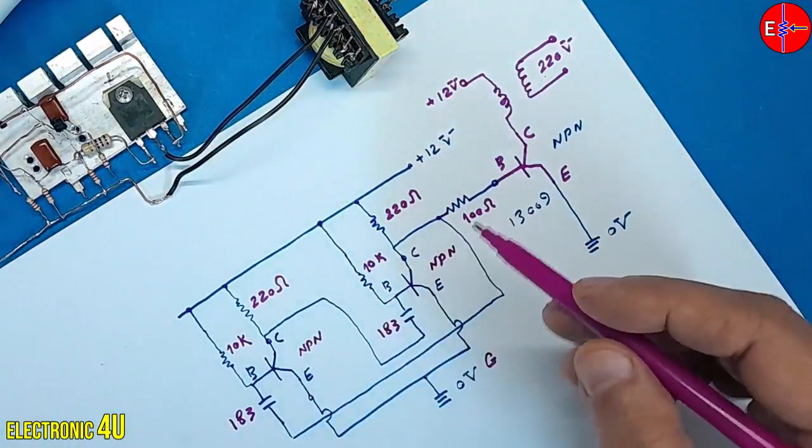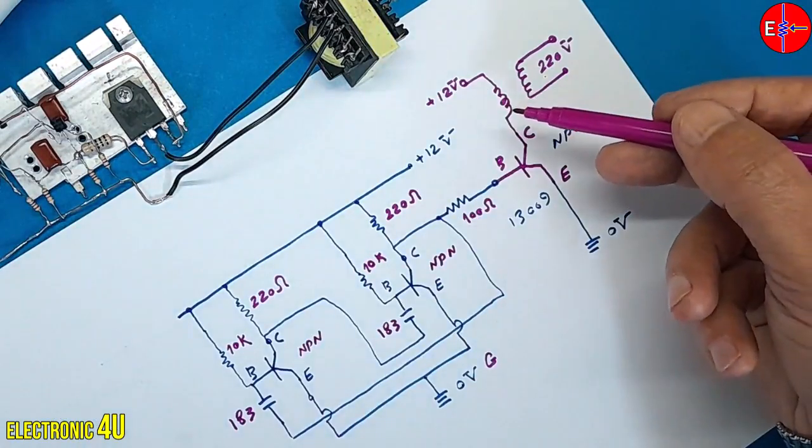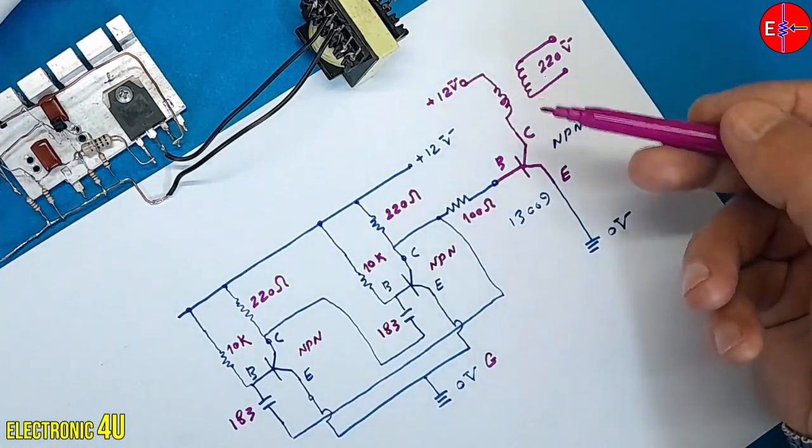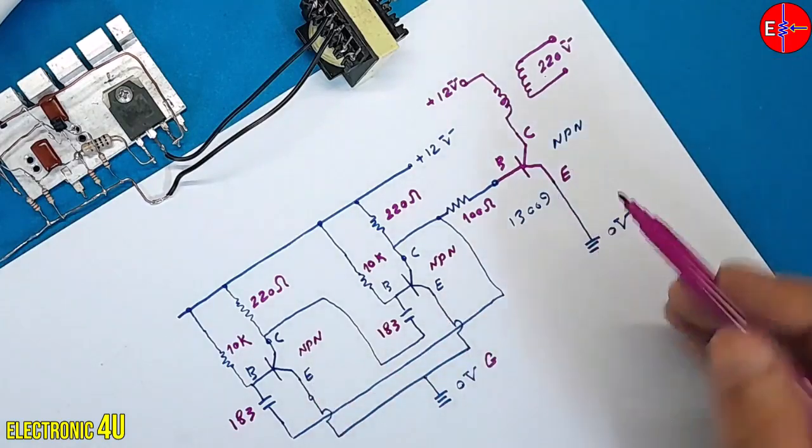This is the entirety of the circuit, featuring the positive voltage entering, transforming through the transformer, and eventually reaching the collector. The emitters of all transistors are interconnected.